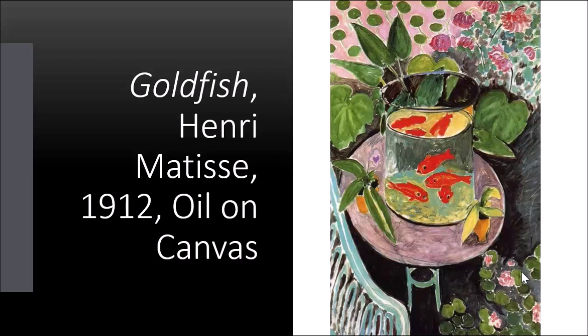This is Henri Matisse's The Goldfish, done in 1912, which kind of takes it out of the Fauvist time frame. Oil on canvas — a beautiful painting for its time. Matisse was looking to create deliberate disharmonies in his work; he's known for saying that. Goldfish were introduced to Europe from East Asia roughly around the 17th century, and this would become a recurring subject for Matisse from around 1912.